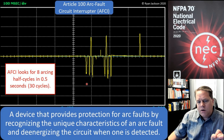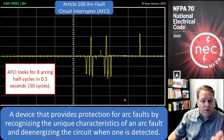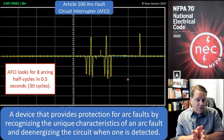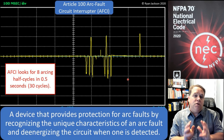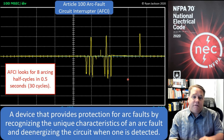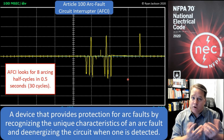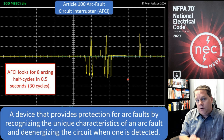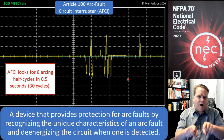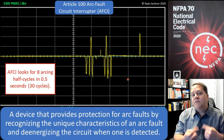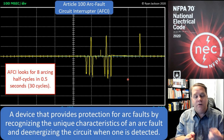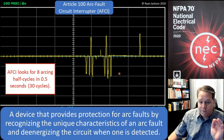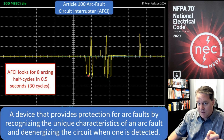An arc fault circuit interrupter counts how many of these peaks happen. What it's looking for is eight arcing half-cycles in 30 cycles — so in half of a second, if we see eight of those happen, we know that is a dangerous arcing fault. But it's only dangerous if it exceeds a certain amount of current. If there's essentially no current flowing, there's no danger. For a parallel arc — hot to neutral — we're looking for a 75-amp arc that happens eight times in one half of a second.